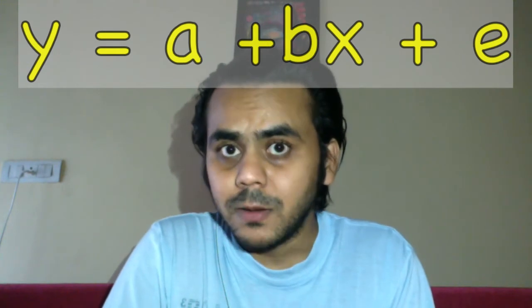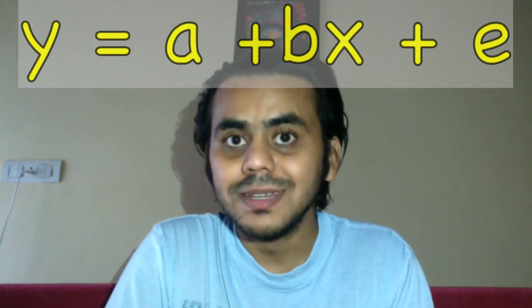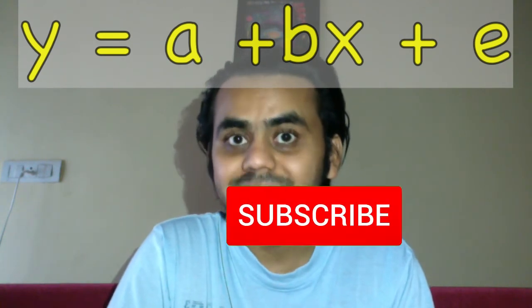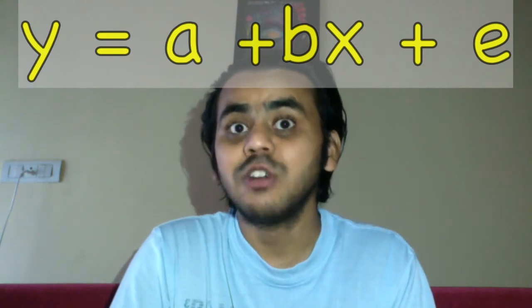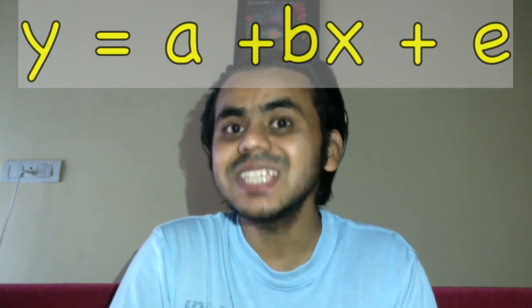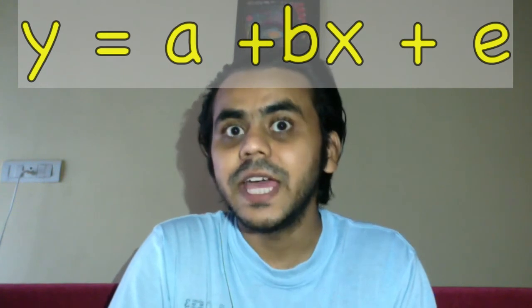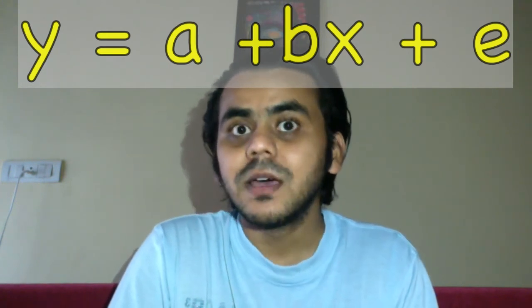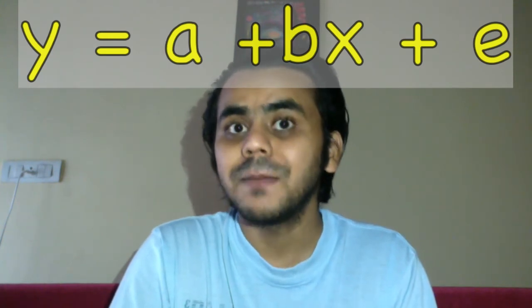Now what do you mean by error term? See, a basic background here is we have an assumption that the model is linear in nature, y is equal to a plus bx. Now it may happen that the model is not perfectly linear, or it may happen that y is approximately equal to a plus bx, not exactly equal. So we need an error term e. Now this e is random for our purposes, because if it was not random, we could have calculated it by some means.